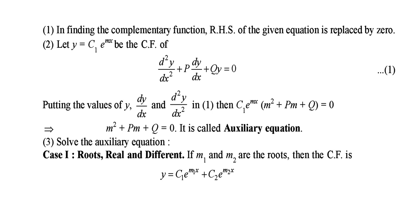In finding the complementary function, the right hand side of the given equation is replaced by 0. So, let y equal to c1 e to the power mx be the CF of d²y/dx² plus t dy/dx plus qy equal to 0. Substituting the values of y, dy/dx, and d²y/dx² into the equation, the solution will be c1 e to the power mx times (m² plus tm plus q) equal to 0, where m equals dy/dx. This gives the auxiliary equation of the given differential equation. So first we find the auxiliary equation and then find its roots.